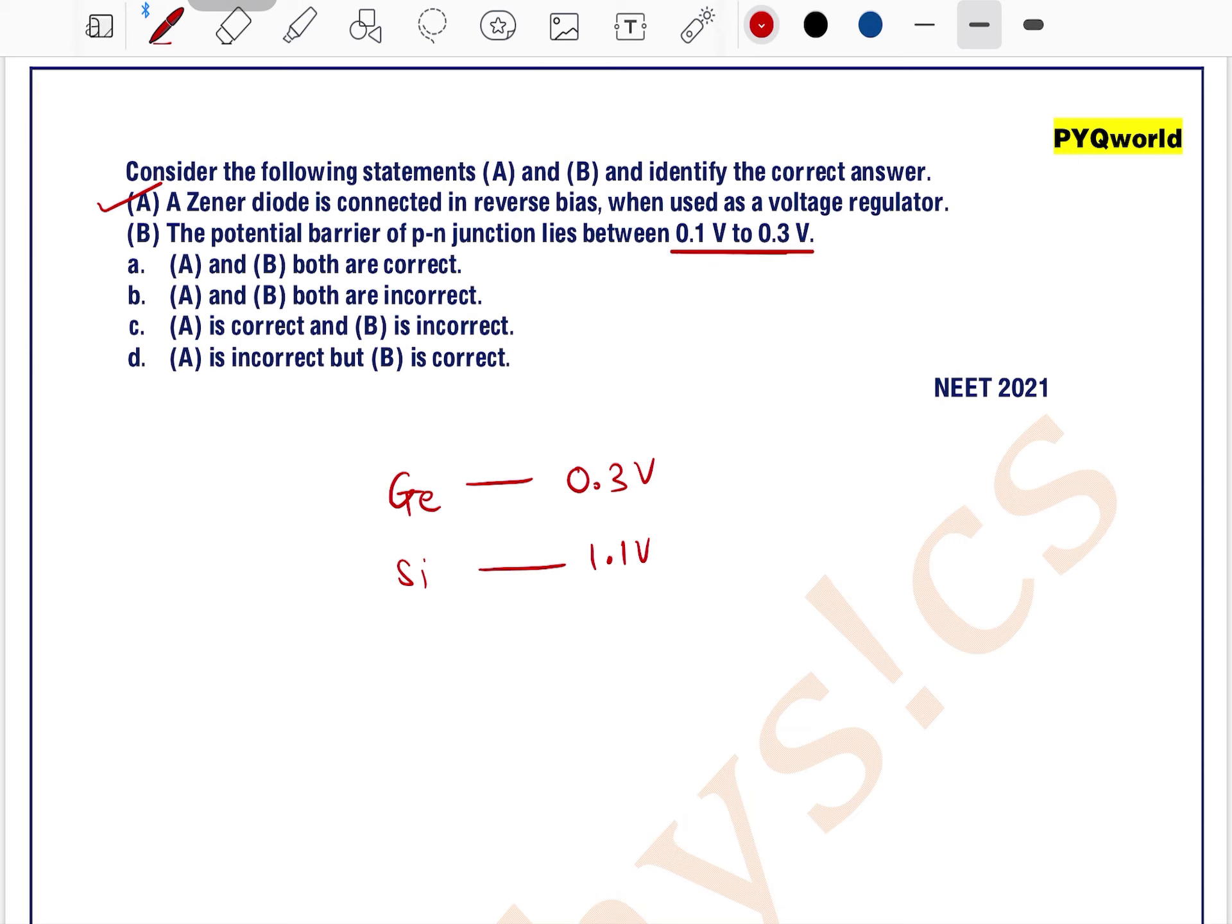No, for germanium it is 0.3V, but for silicon it is 1.1V, and for gallium arsenide it is more than 0.7V.